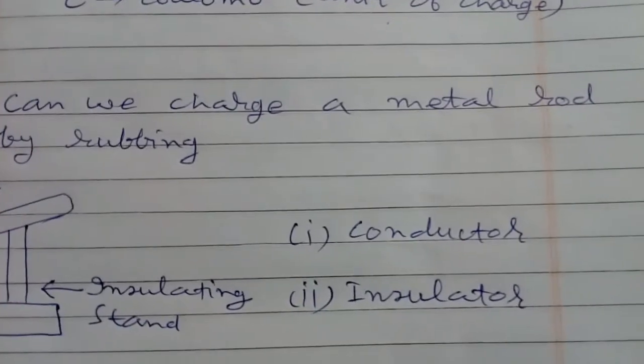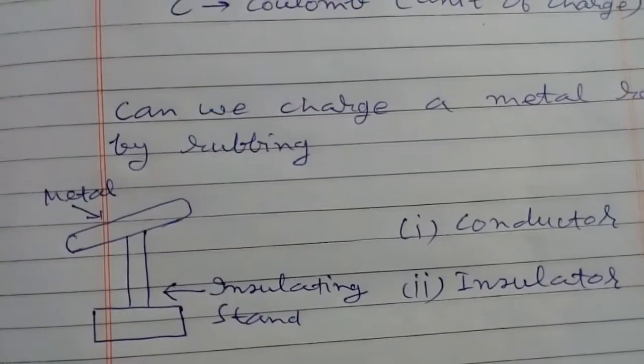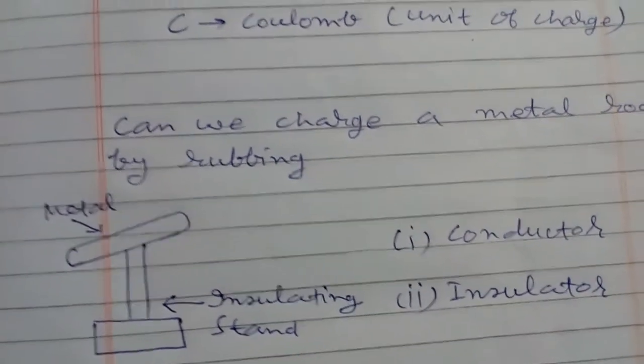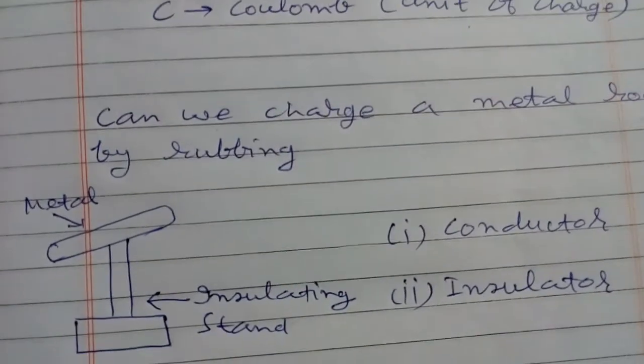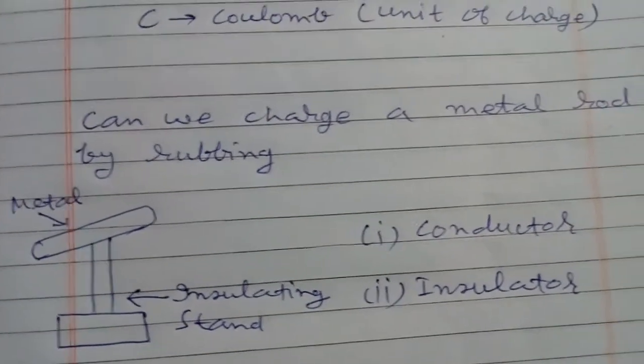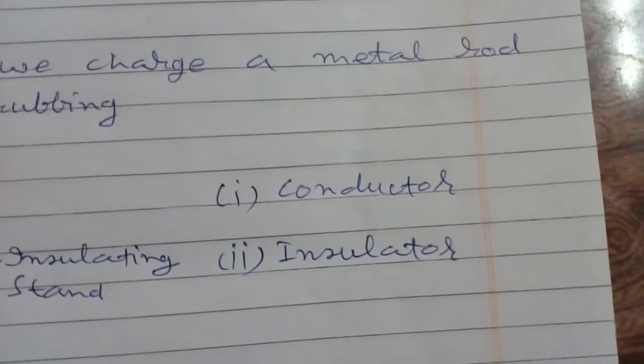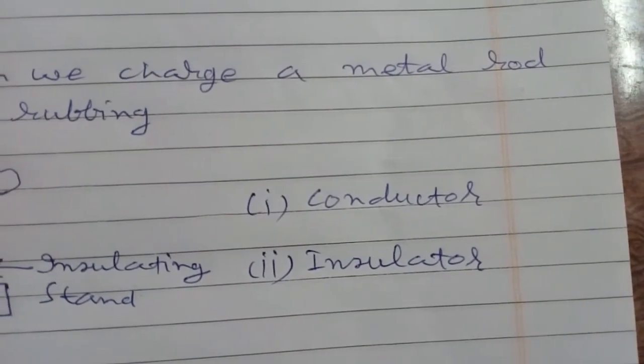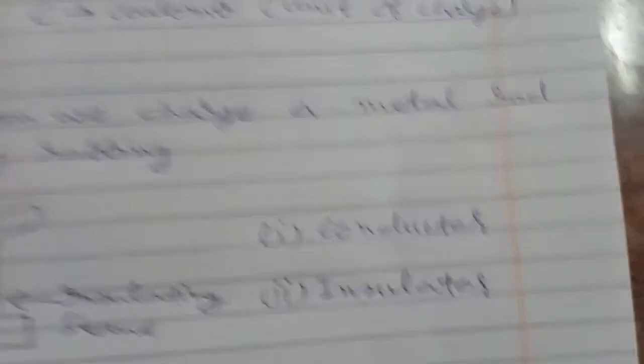Can we charge a metal rod by rubbing while holding the rod in our hands? No, we cannot charge it because metal is a conductor of electricity. So when we charge it by rubbing, all the charge passes through earth, through our hand and body. There are two types of materials, conductors and insulators. Conductors are those materials in which charge can flow easily, and insulators are those materials in which charge cannot flow easily. Their resistance is very high.